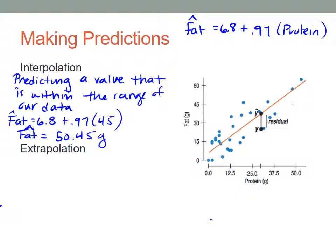We can also make predictions that are outside of our range of data. Let's take a look at where that might be. Notice I don't have any data that's way out here. Maybe at, let's say, at 60 grams.